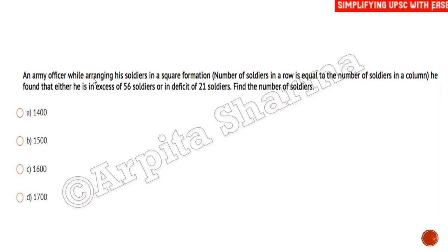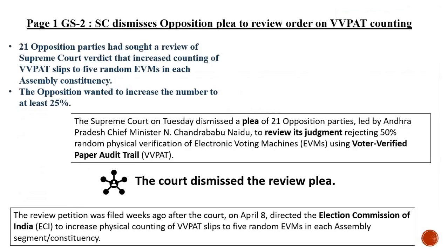Question number two: an army officer, while arranging his soldiers in a square formation where the number of soldiers in a row equals the number in a column, found that he is either in excess of 56 soldiers or in deficit of 25 soldiers. Find the number of soldiers. Tell me the answer in the comment section — I'll give you the correct answer in the next class.